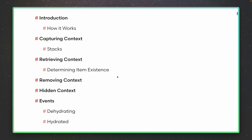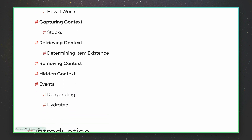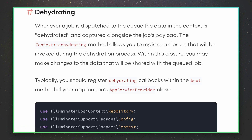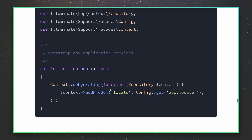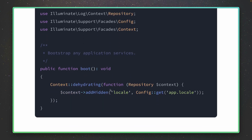Like in our example, notifications or other services that use the locale are now using the correct one. I hope with this example I could show you how powerful the context feature is, especially with those hooks — they are called events, and we talked about the hydrated event today, but there is also one for dehydrating that you can check out as well. Make sure to check the official documentation to see what this new feature can do for you. Have you used it already? Please let me know in the comments about your use cases. Have fun, bye!